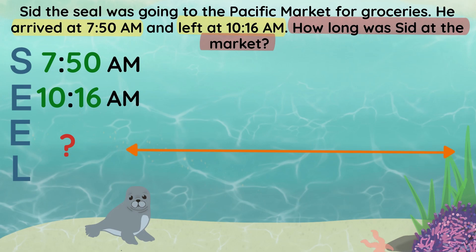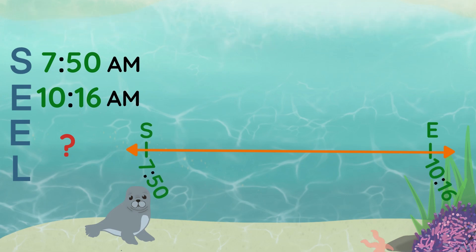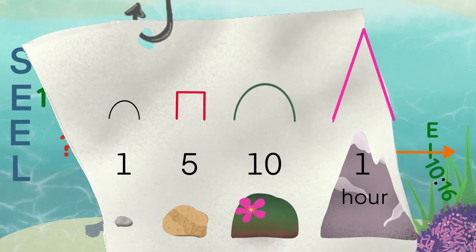Now that we have that written, we can easily see that we are missing the elapsed time, or total time that Sid was there. Next, we will draw a number line to find the elapsed time. First, we will label the start and end time. Now that we have done that, we will need to find the time in between. To guide our thinking, we will use this chart. We will use pebbles to represent 1 minute, rocks to represent 5 minutes, hills to represent 10 minutes, and mountains to represent 1 hour.